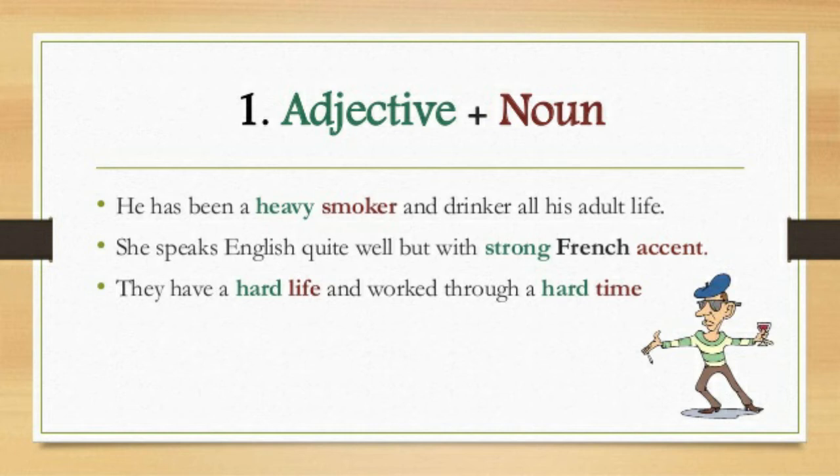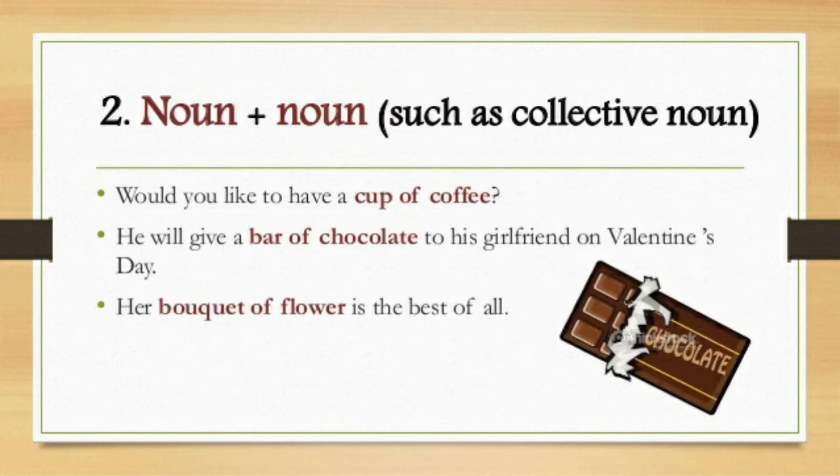The next type we have is noun plus noun. A noun is a naming word, and here it refers to collective nouns. A collective noun is a name given to a group of people or things. For example, we call a group of birds a 'flock of birds,' or 'a bunch of keys,' 'a bunch of bananas.' The second type of collocations are formed with the help of noun plus noun.